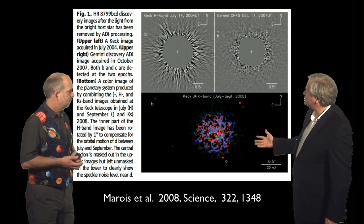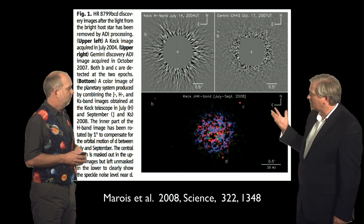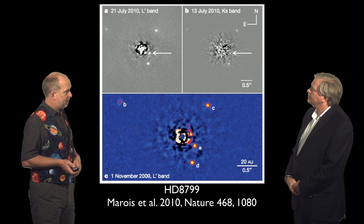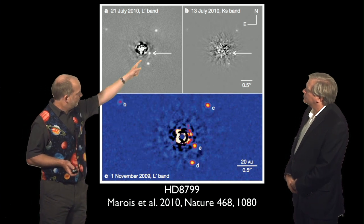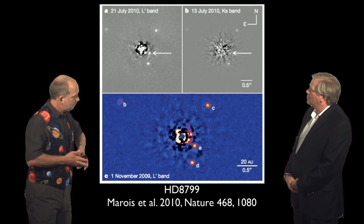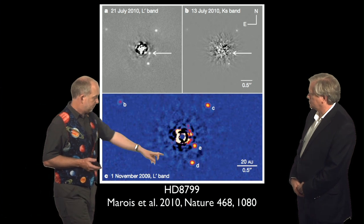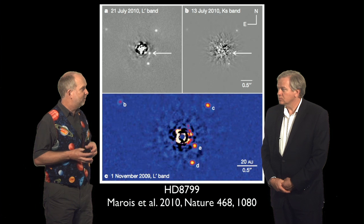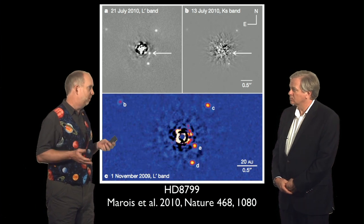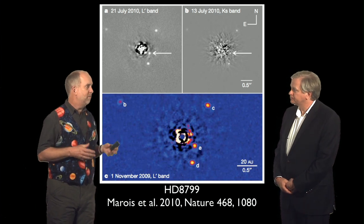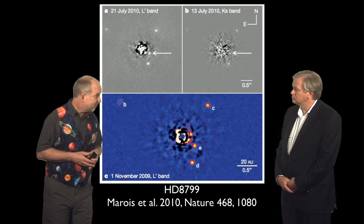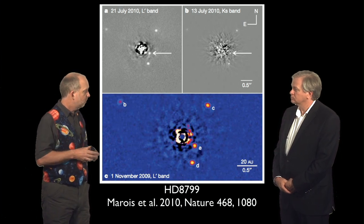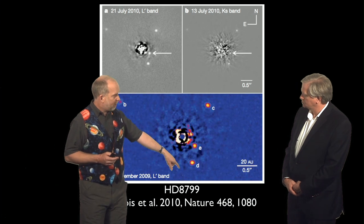This object has four planets — they found three initially, then went back and re-observed a year later and found another one a bit closer in. These planets are pretty bright, and to be this bright given how old the star is, they would have to be somewhere between maybe five and fifteen Jupiter masses. So these are still very big, just below-brown-dwarf planets.